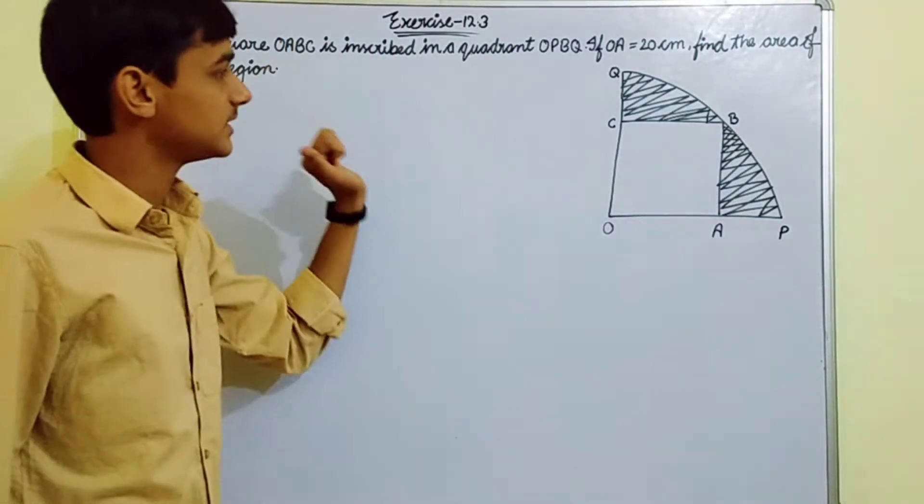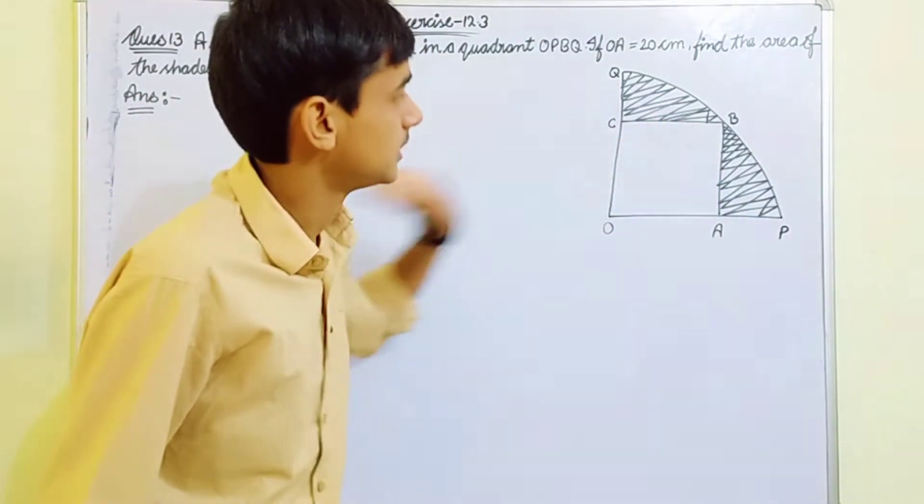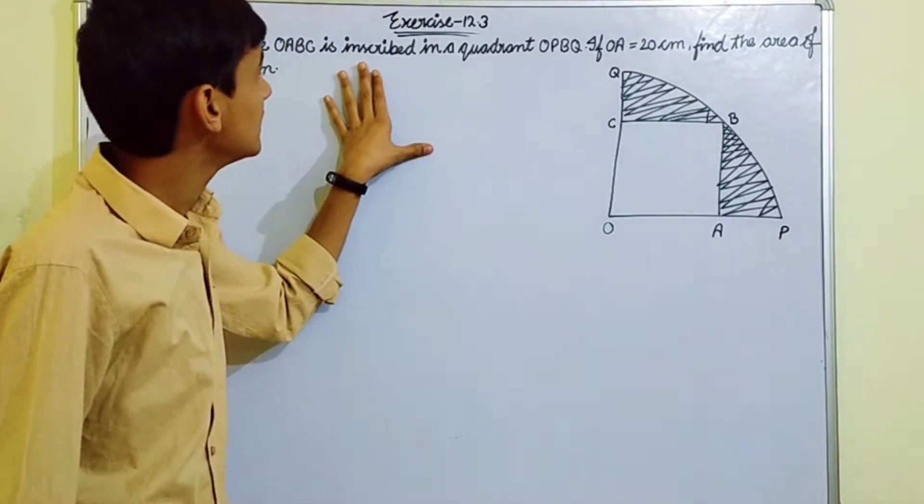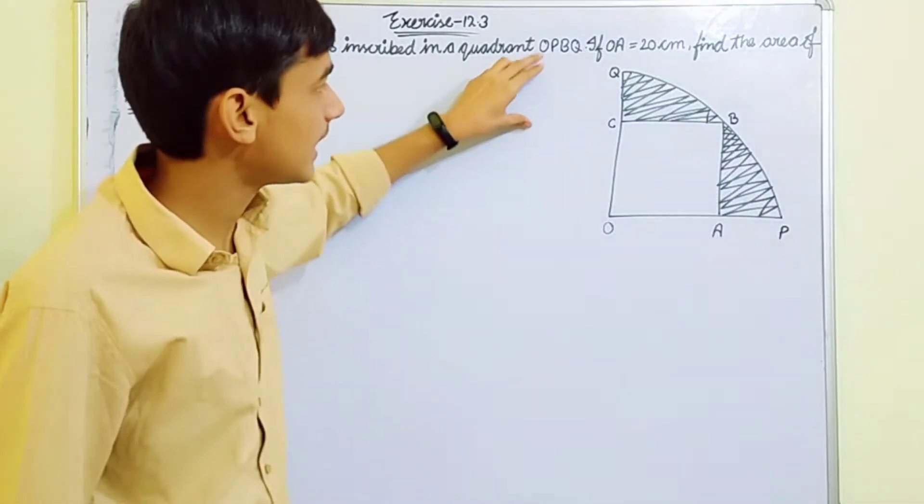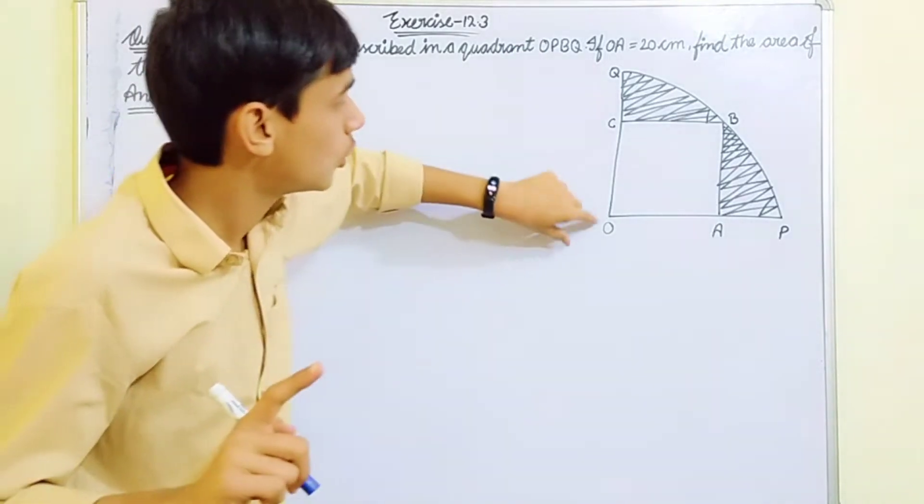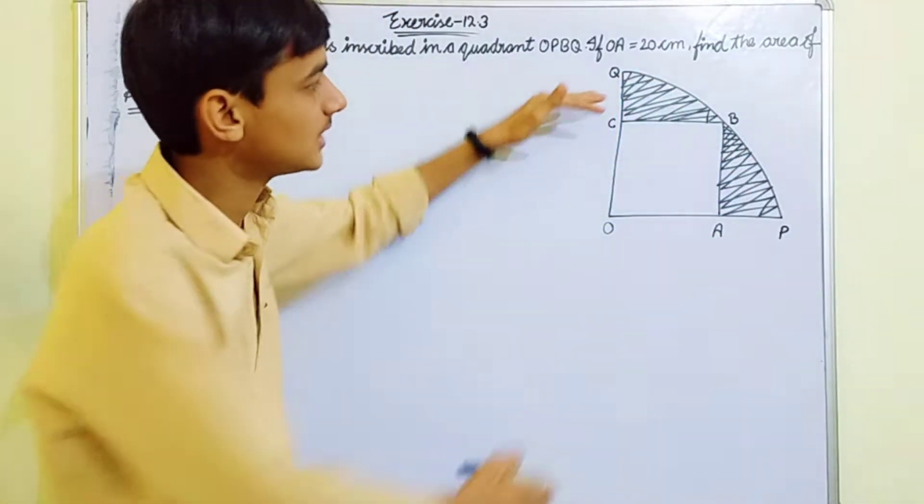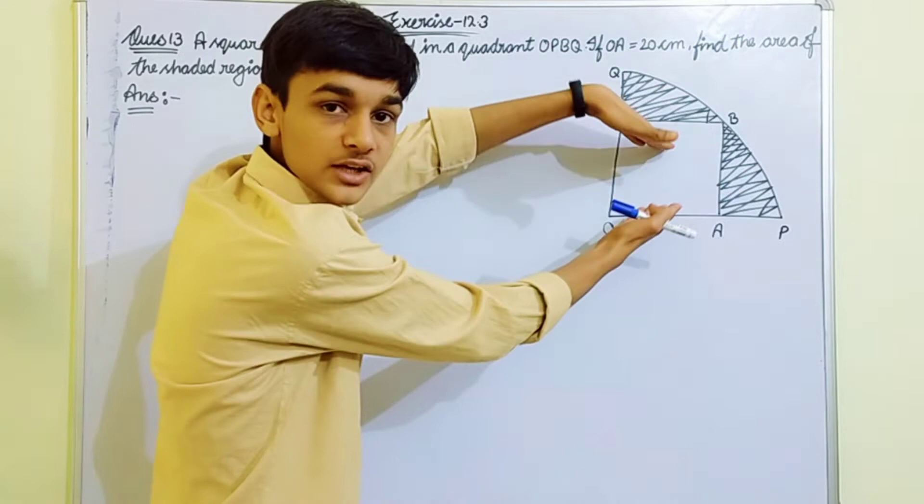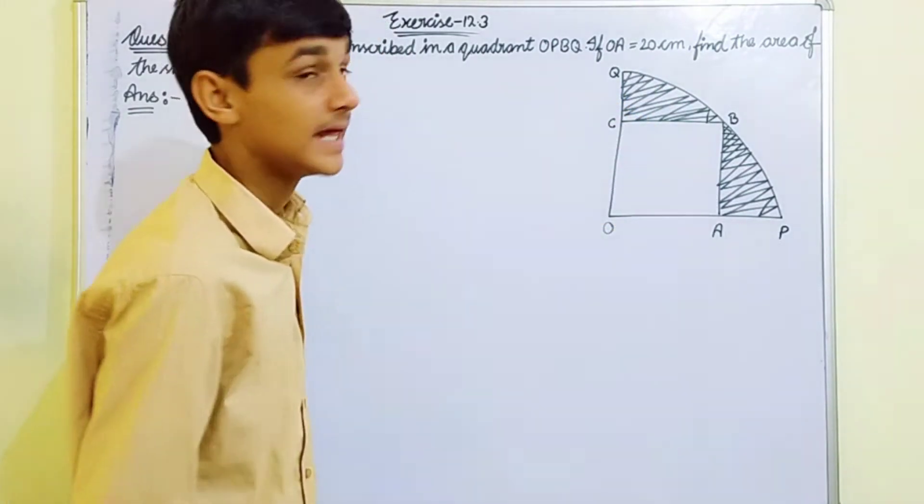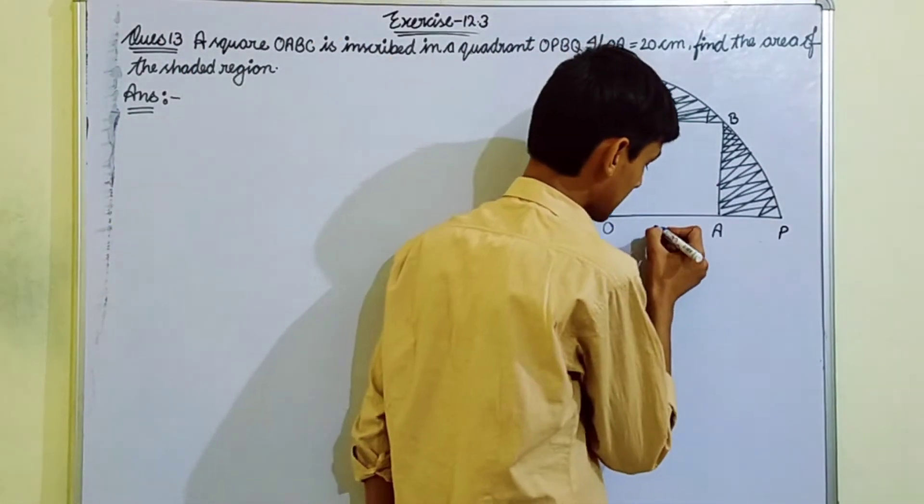A square OABC is inscribed in a quadrant OPBQ. OPBQ is the quadrant enclosed here. The side is given as 20 cm, OA is given as 20.